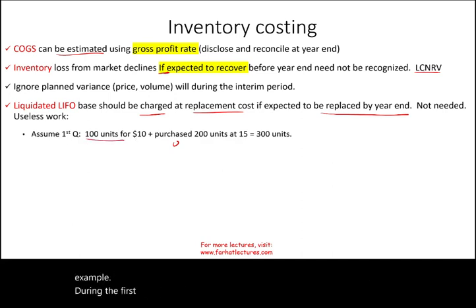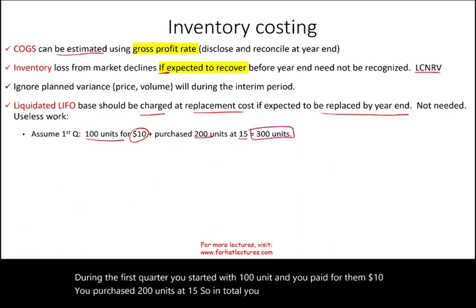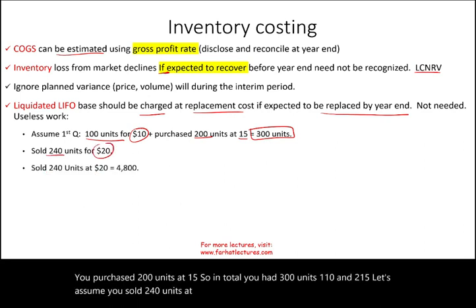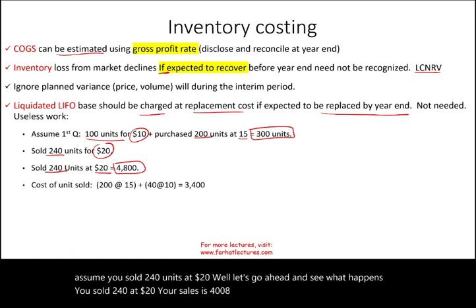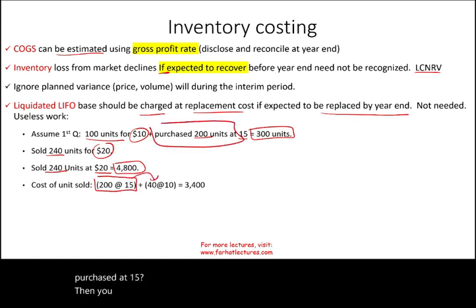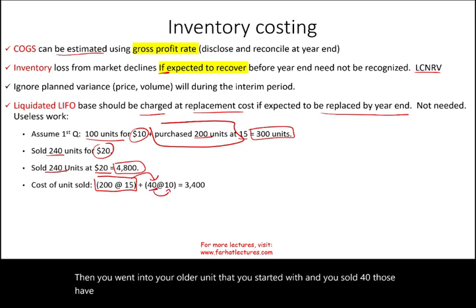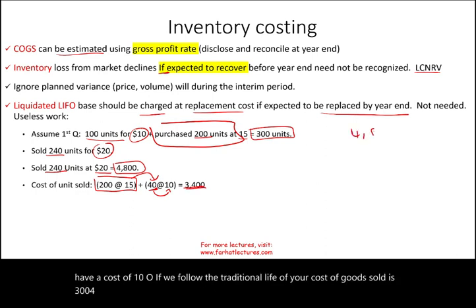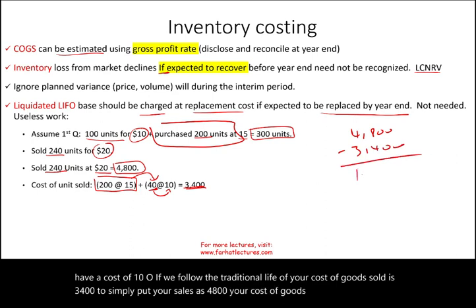Let's work an example. In the first quarter, you started with 100 units at $10 and purchased 200 units at $15, giving you 300 total units. You sold 240 units at $20, so sales equal $4,800. Using LIFO, you sold the 200 units purchased at $15, then 40 of the older units at $10. Your cost of goods sold is $3,400, giving a profit of $1,400 under traditional LIFO.